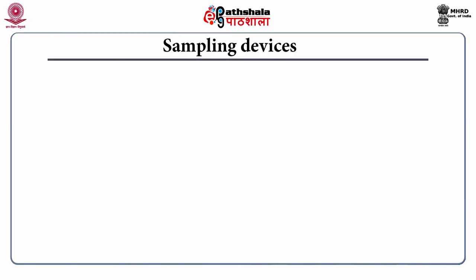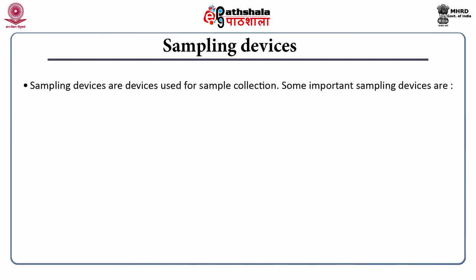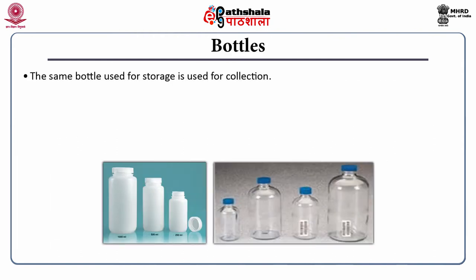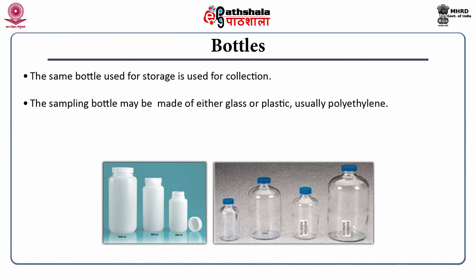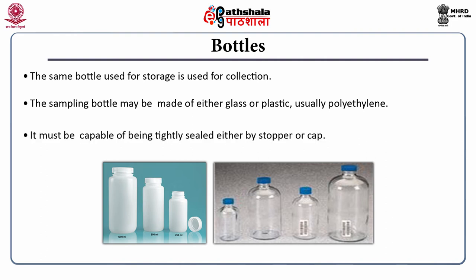Certain sampling devices are needed whenever we go for sampling. The important sampling devices are bottles and samplers. The same bottle used for storage should be used for collection of the sample. The sampling bottle may be made of either glass or plastic, usually polyethylene. It must be capable of being tightly sealed either by stopper or cap. It is recommended that plastic bottles should be used for heavy metals analysis.